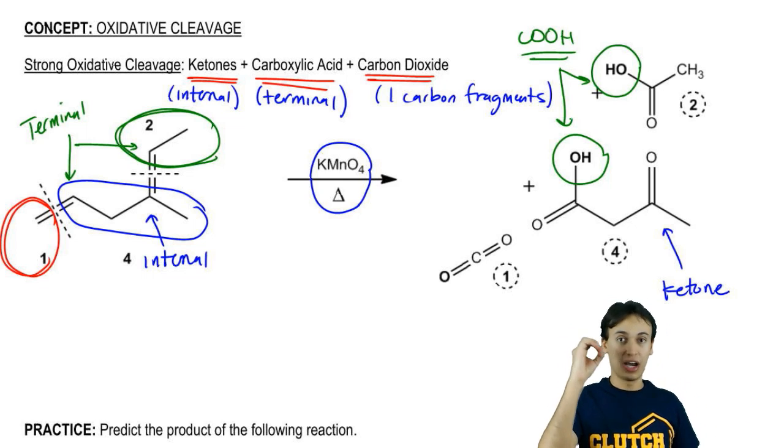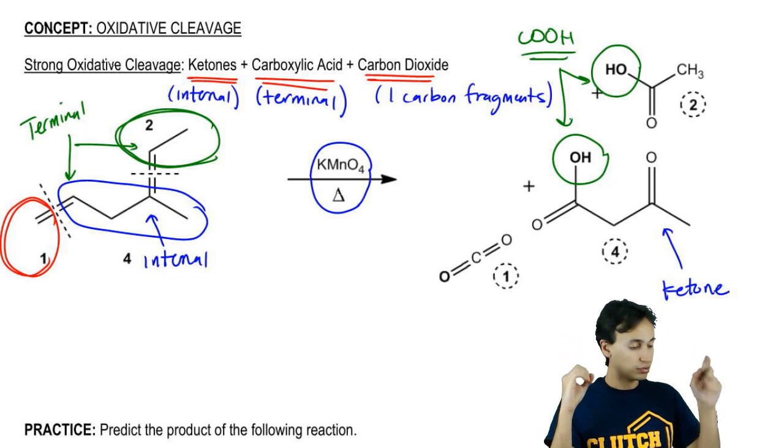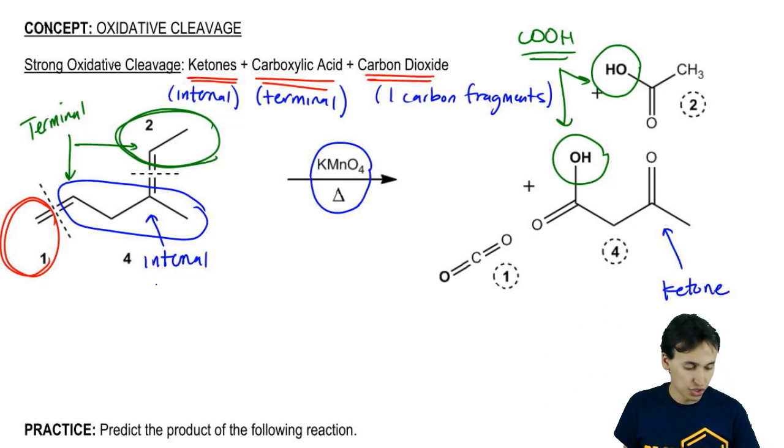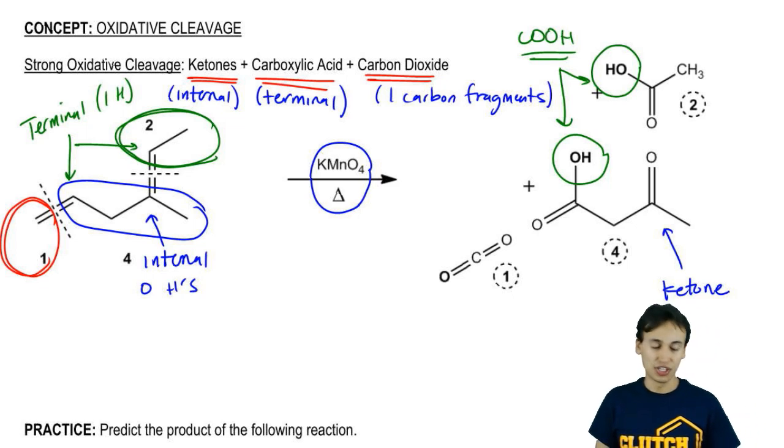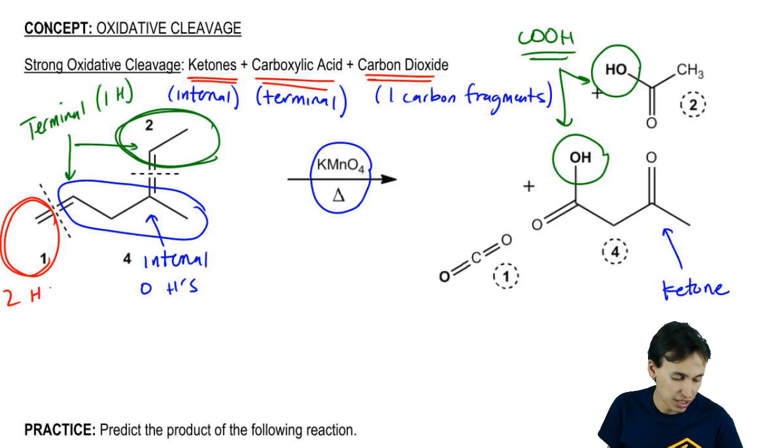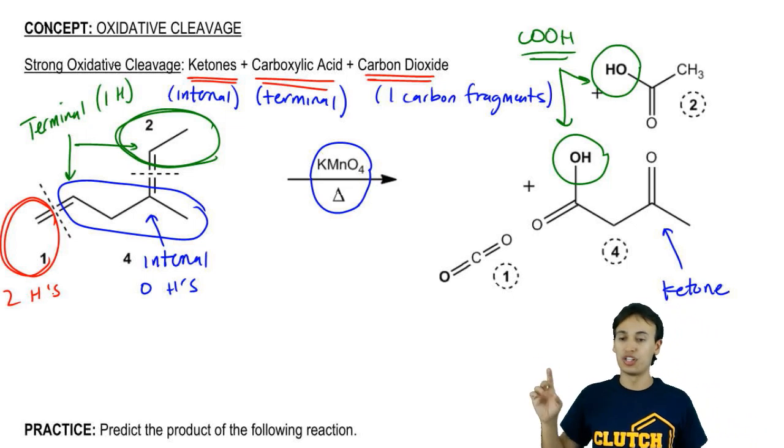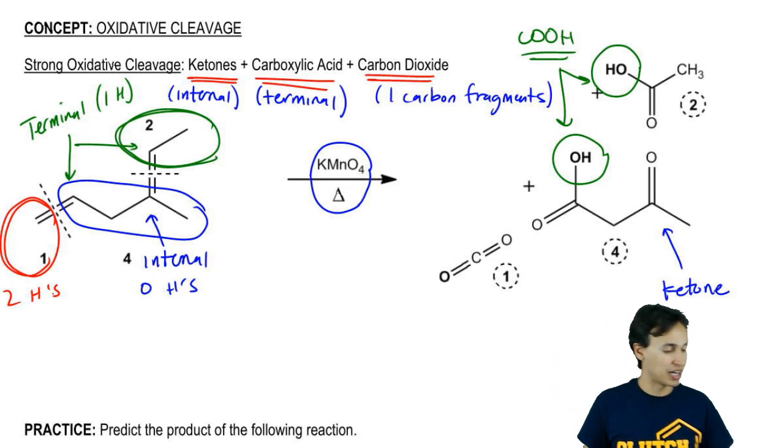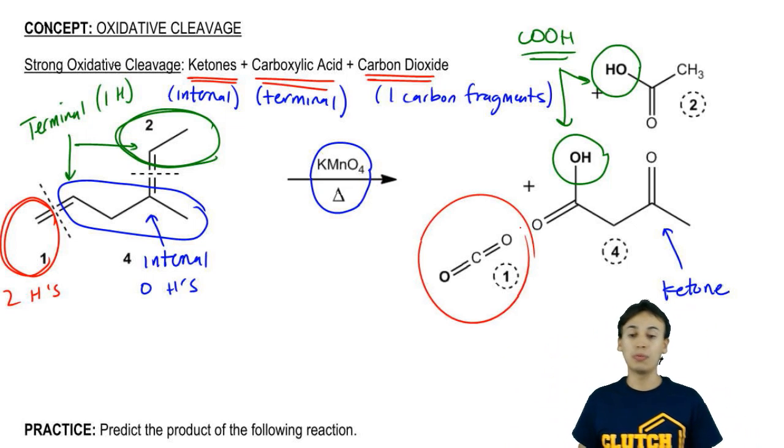We had one hydrogen each. So basically, we saw what happens when you have zero hydrogens. You get a ketone. Let's also write that down. Internal is zero hydrogens. Terminal is when you have one hydrogen. So guess what the last one is. When you have two H's. So when you have two hydrogens, that means you're one carbon fragment. That's all you have left. And that's when you get fully oxidized to carbon dioxide.